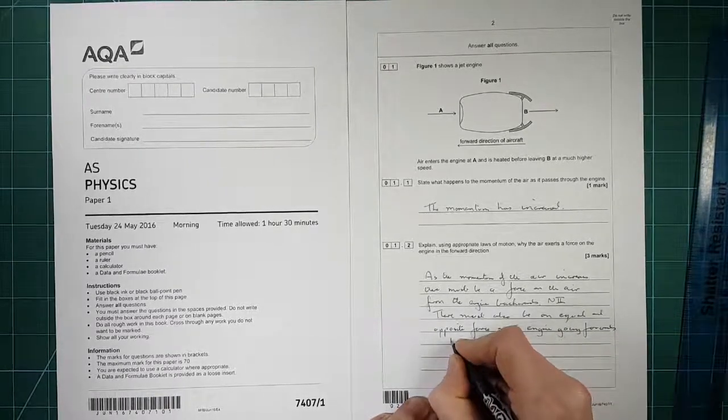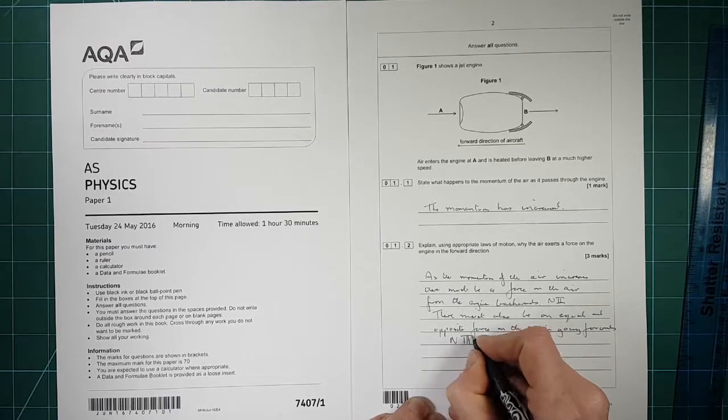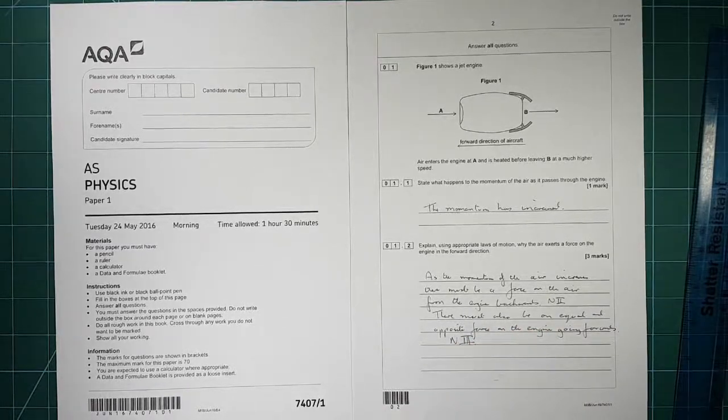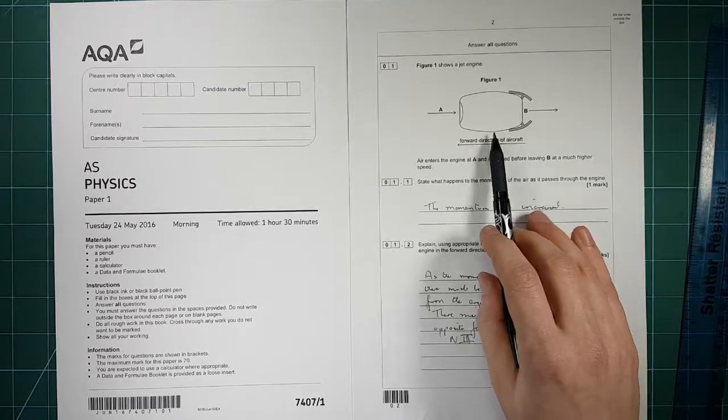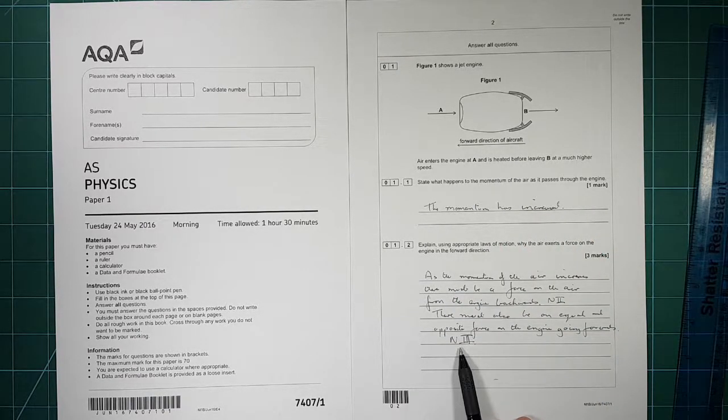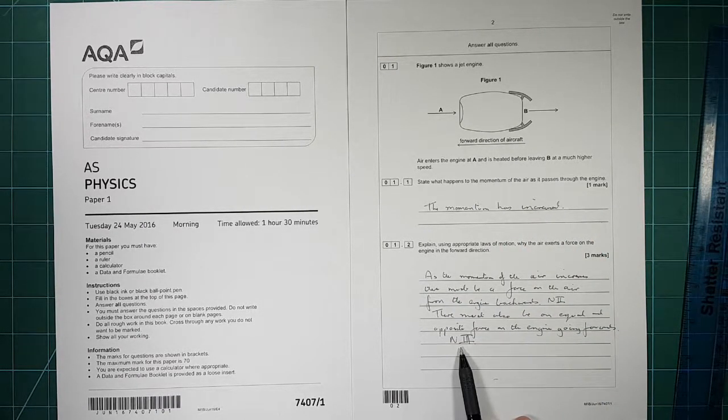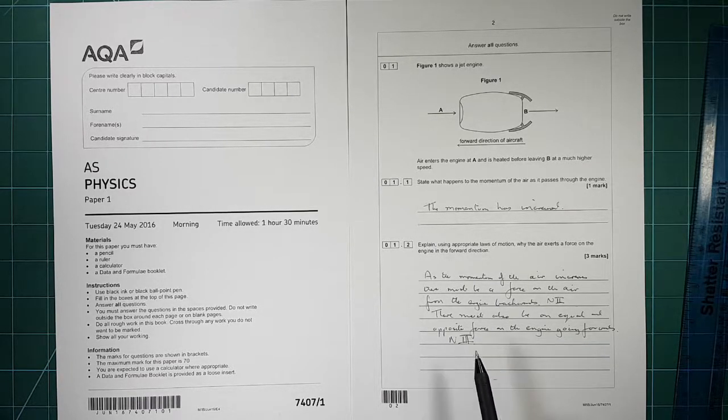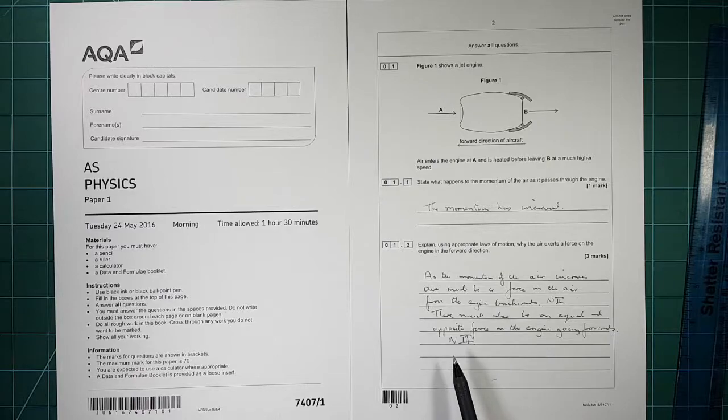And that is Newton's third law. So Newton's second law, force is rate of change of momentum. Newton's third law is that if body A exerts a force on body B then body B exerts an equal and opposite force back on body A.